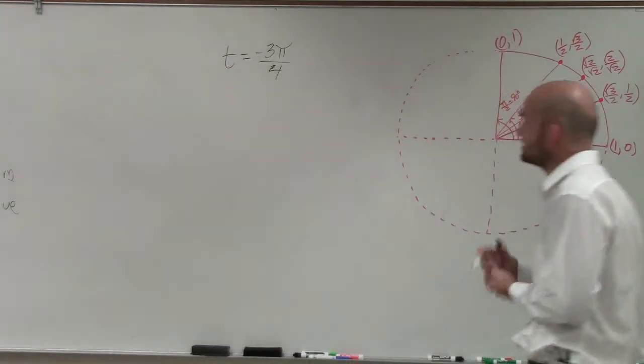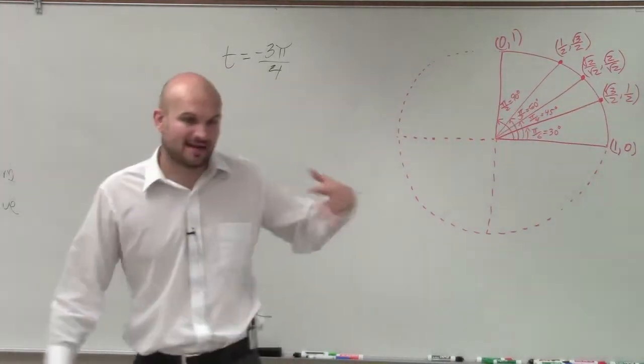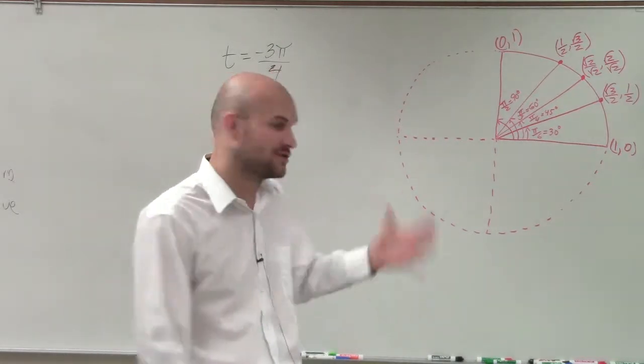Hello, welcome. So what I have here is t equals negative 3π over 4, and what I want to do is show you how to find that point on the unit circle.